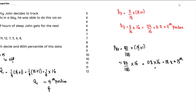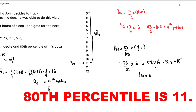Counting to the 13th position: one, two, three, four, five, six, seven, eight, nine, ten, eleven, twelve, thirteen — that value is 11. So the 80th percentile P80 equals 11. This means that if we divide our distribution into 100 equal parts, the value at the 80th percentile is 11.